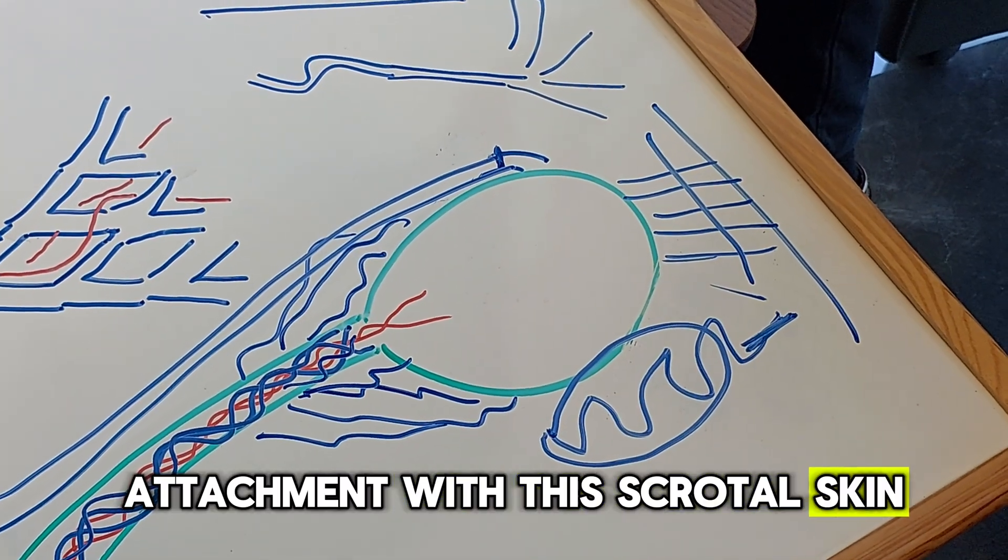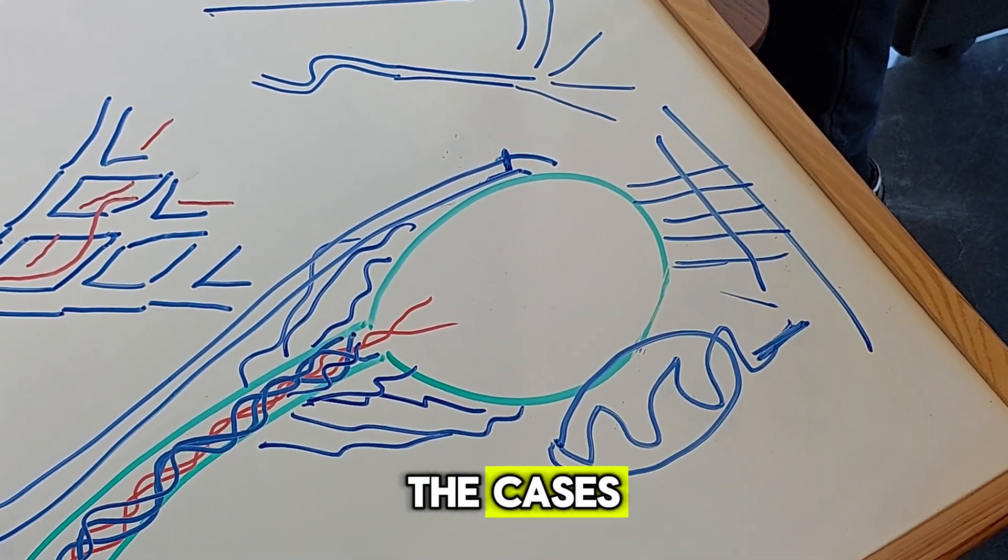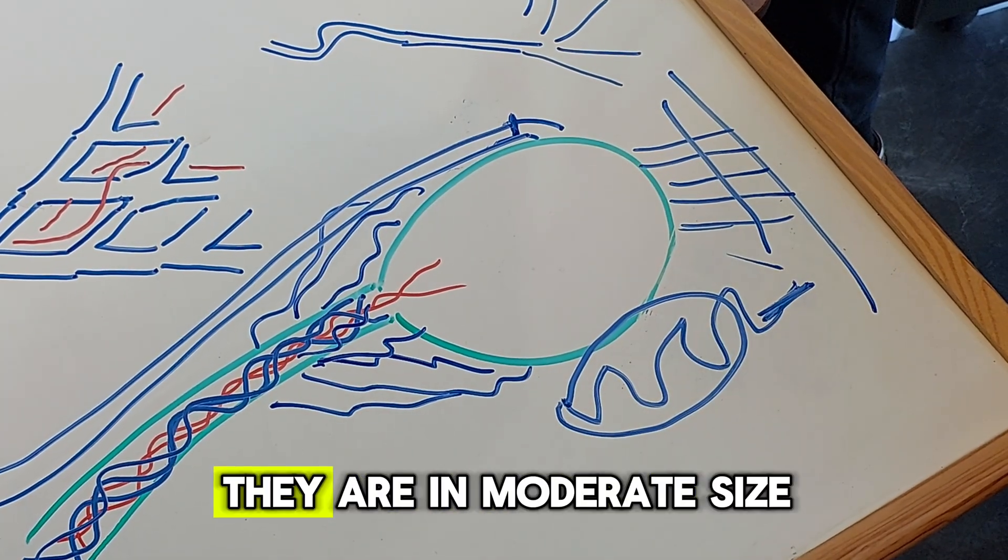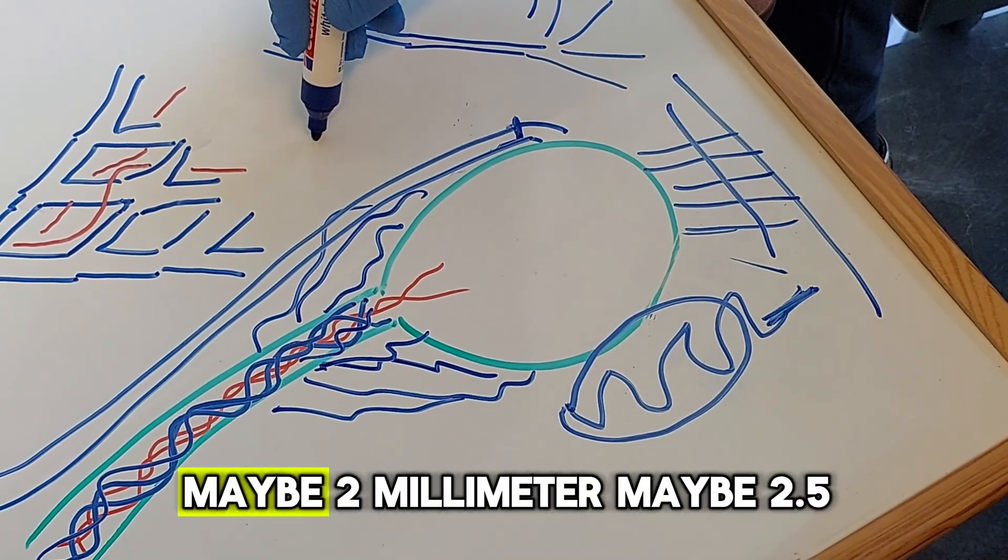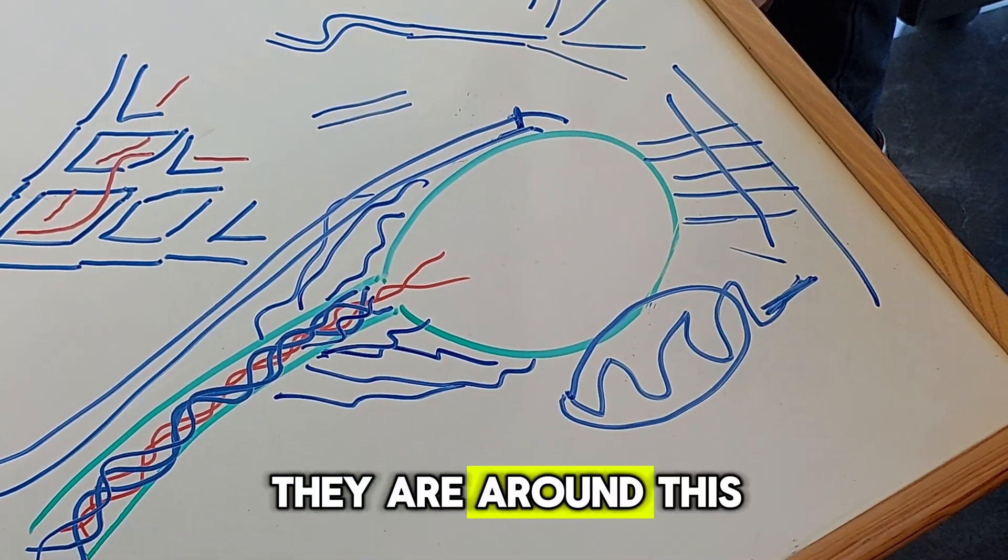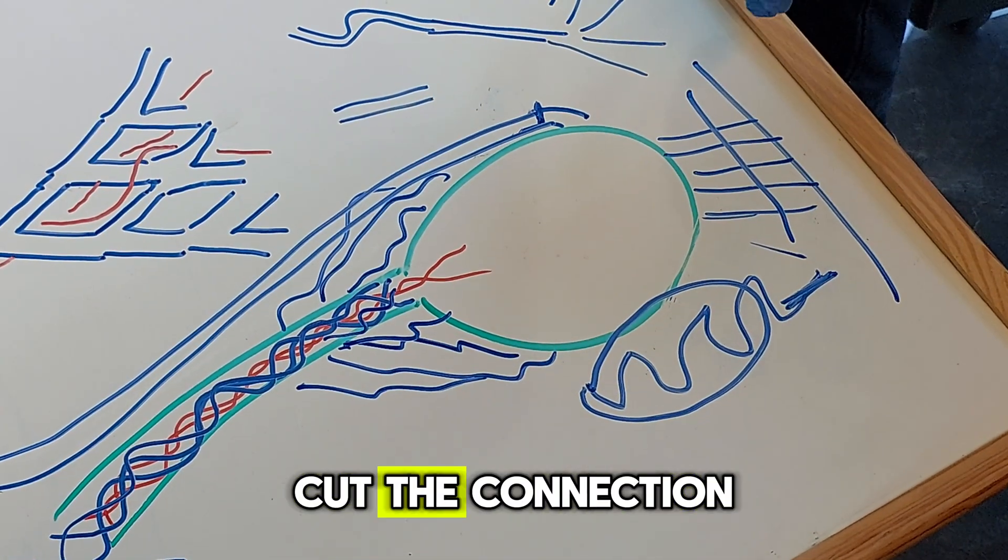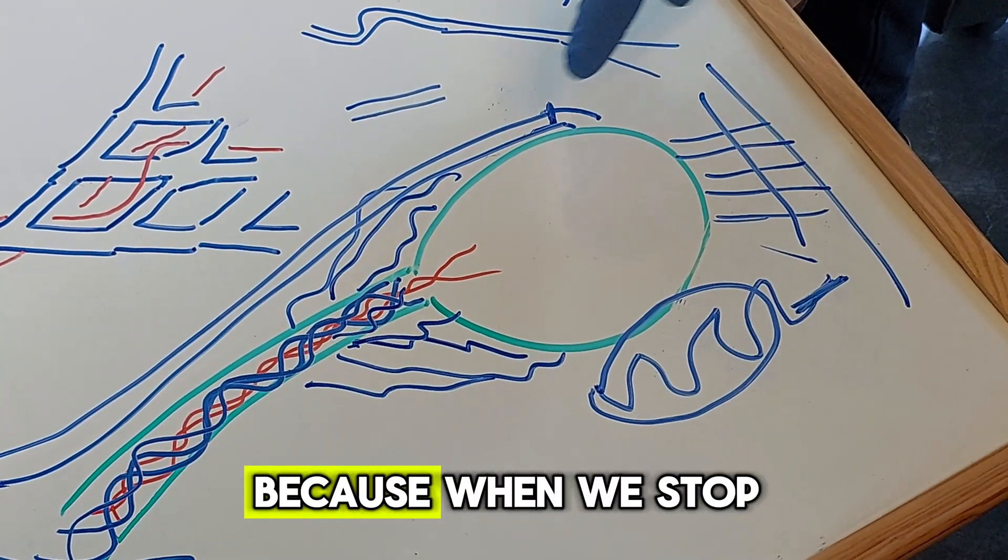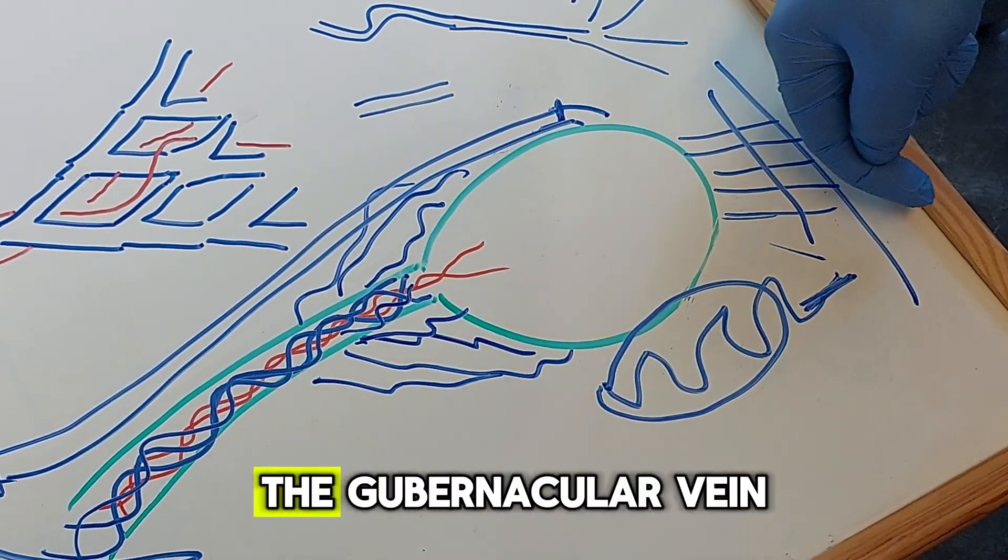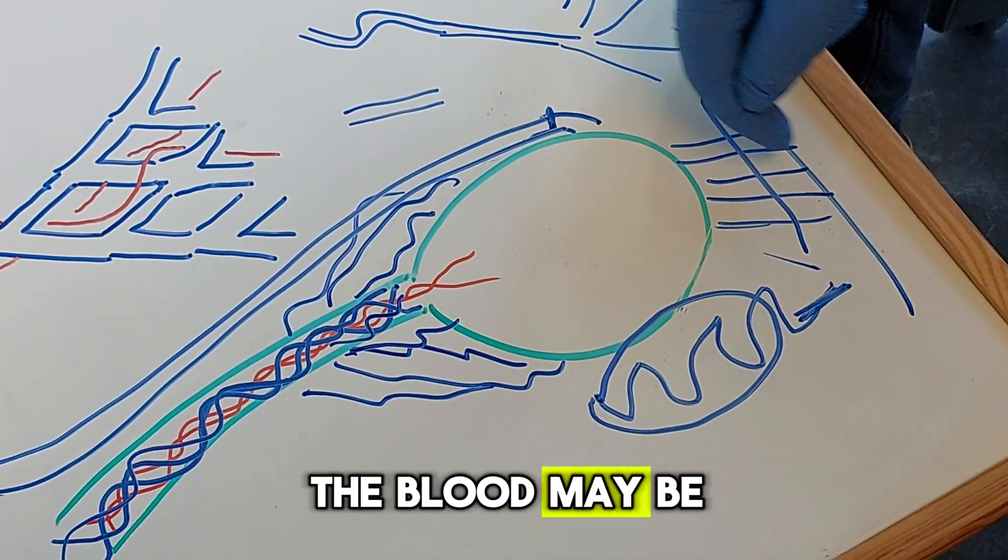But in most of the cases gubernacular veins are not very large, they are in moderate size, maybe two millimeters, maybe 2.5. They are around this. But I want to cut the connection. I ligate them because when we stop the blood circulation here it may go through the gubernacular vein, the blood may be drained through the gubernacular vein.